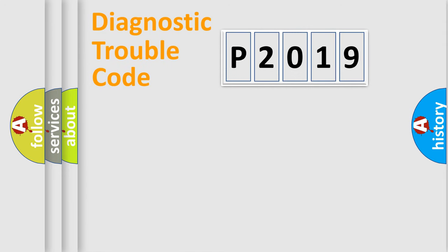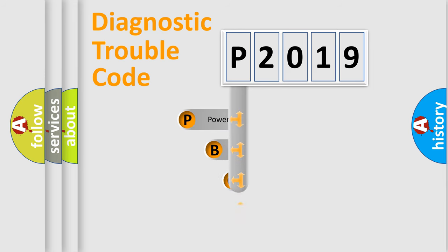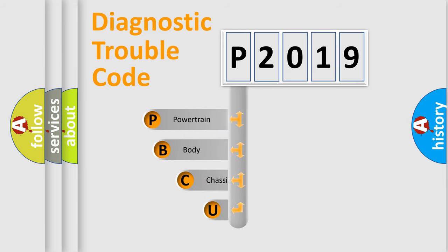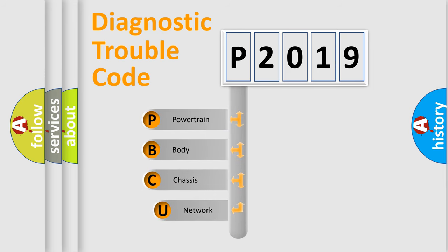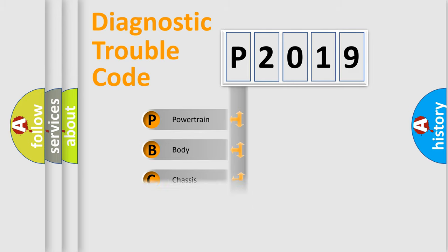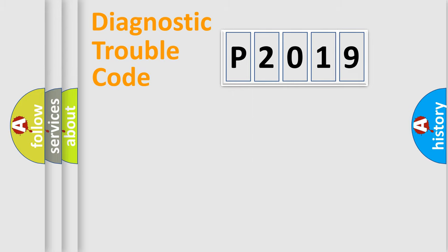Let's do this. First, let's look at the history of diagnostic fault code composition according to the OBD2 protocol, which is unified for all automakers since 2000. We divide the electric system of automobile into the four basic units: Powertrain, Body, Chassis, and Network.